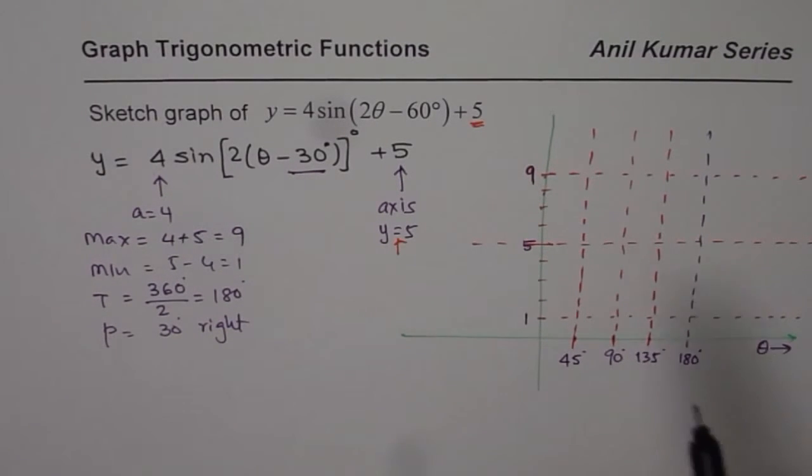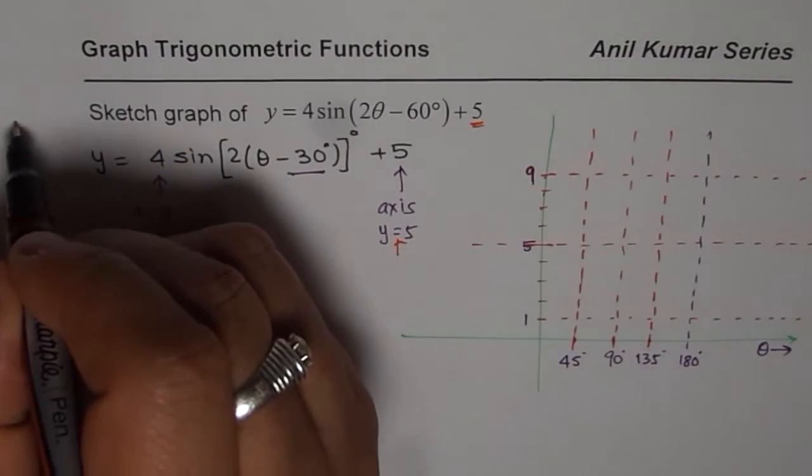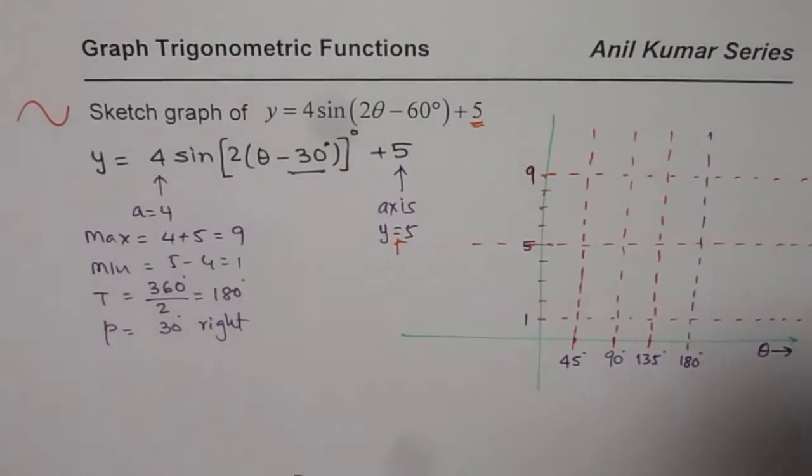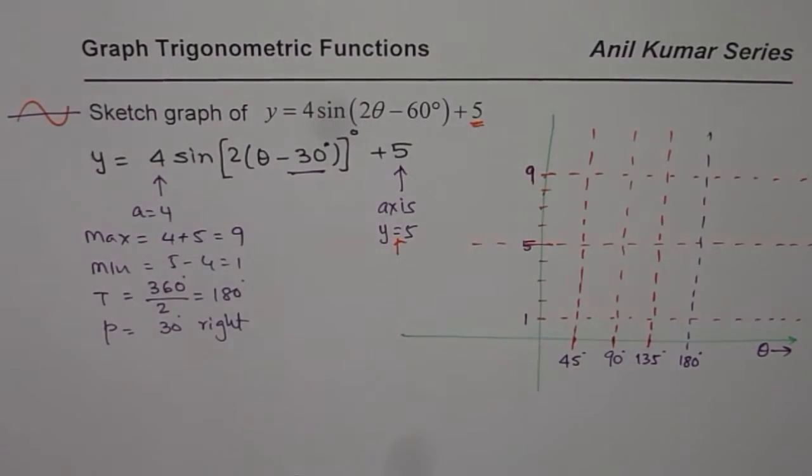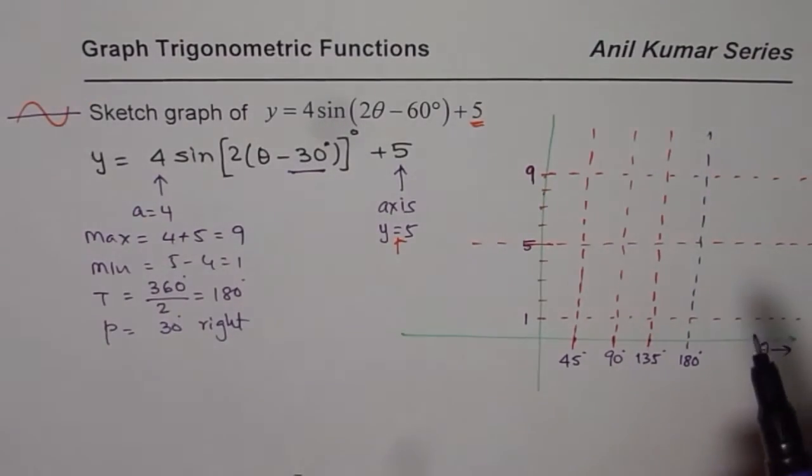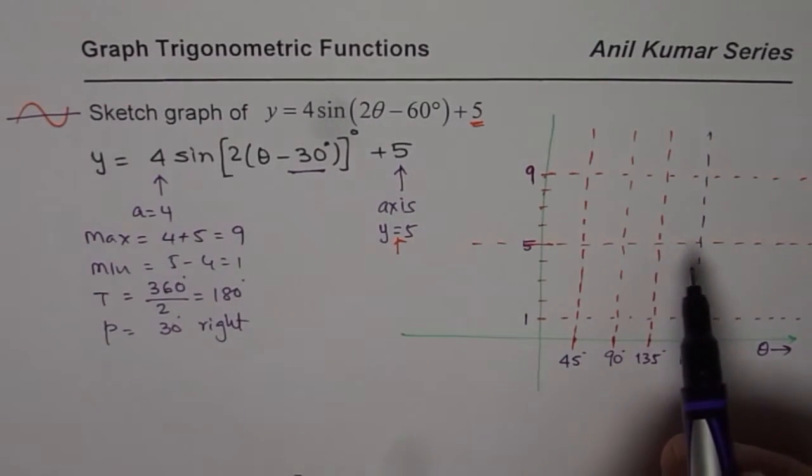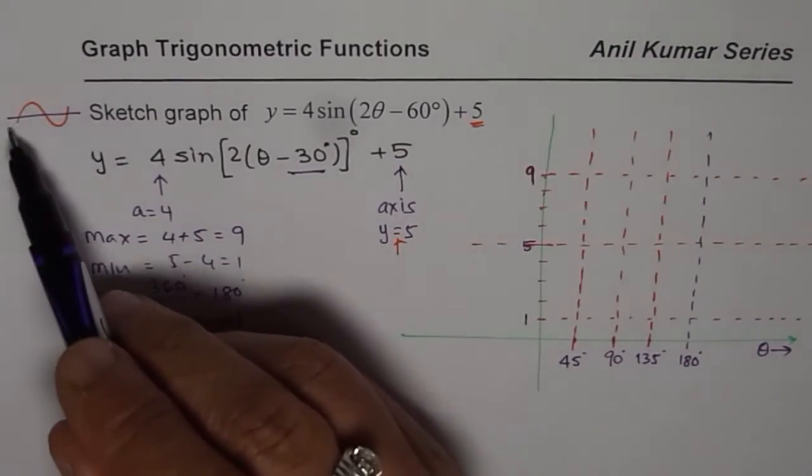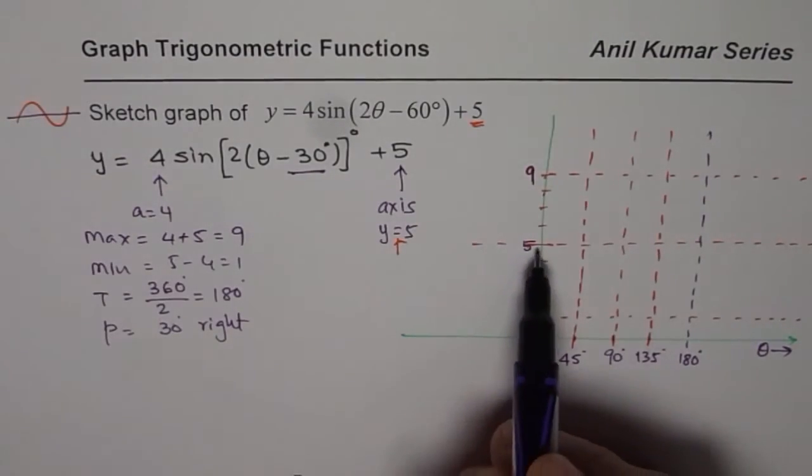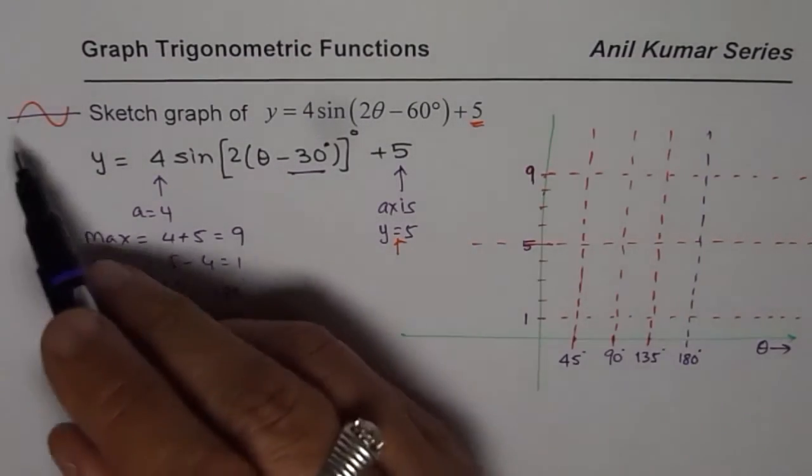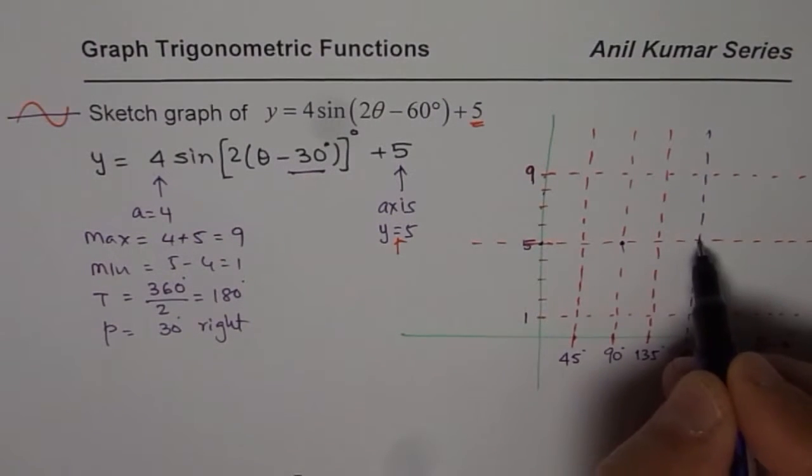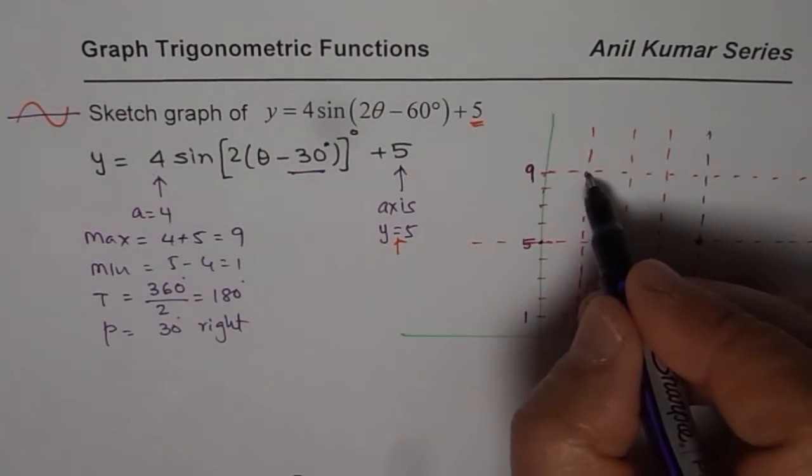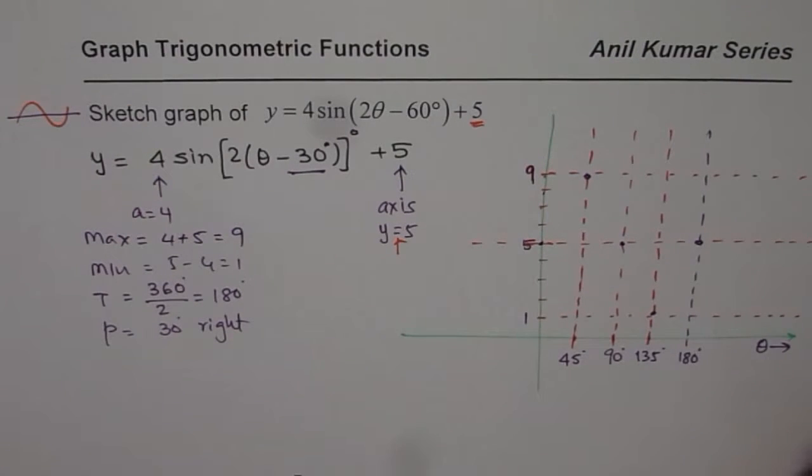Sine graph as you know, let me show you how sine graph should be. We are expecting a graph like this. There is no reflection. In first step I will do this graph. Axis is known to us. At axis we get three zeros. Alternate values: that is my maximum, this is my minimum.